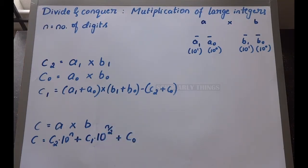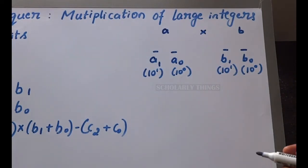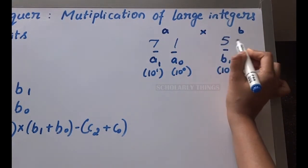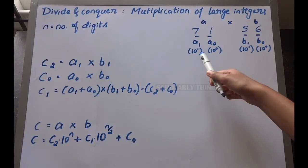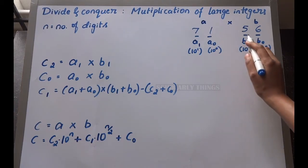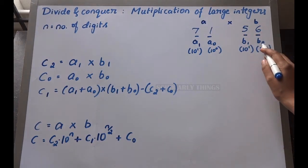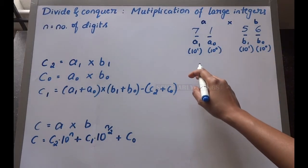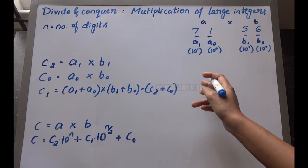Let's consider two numbers: 71 and 56. We can see that a1 value is 7, a0 value is 1, b1 value is 5, b0 value is 6. All we have to do is substitute these values and find out c2, c0, c1, and in turn find out c.